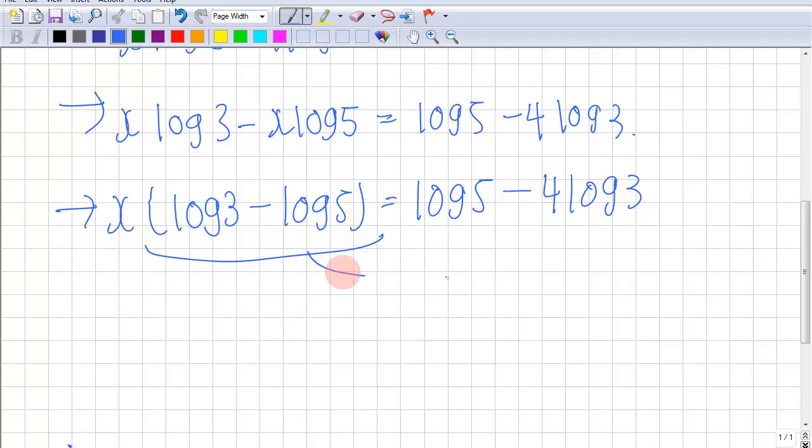We're going to bring this to the other side. So we get x equals to log 5 minus 4 log 3 divided by log 3 minus log 5.